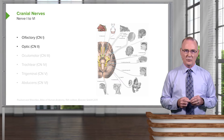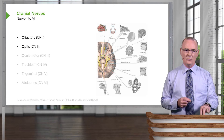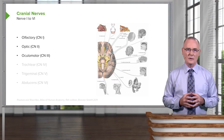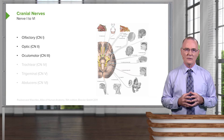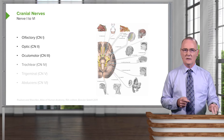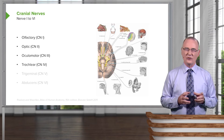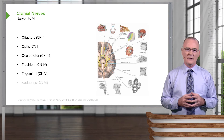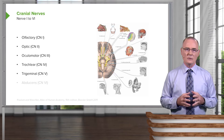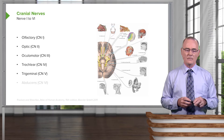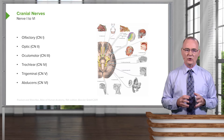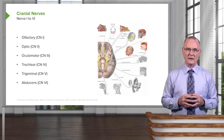Then we'll proceed on to the optic nerve, cranial nerve number 2. Then you'll have an opportunity to take a look at the oculomotor nerve, cranial nerve 3. Next is the trochlear nerve, cranial nerve number 4. Trigeminal, cranial nerve number 5 is next. And then our last nerve will be the abducent nerve, cranial nerve number 6.